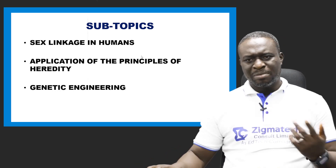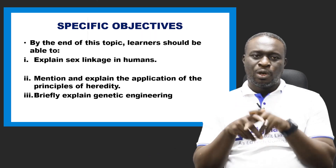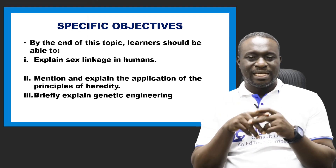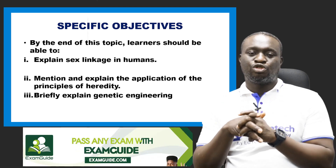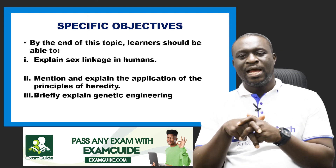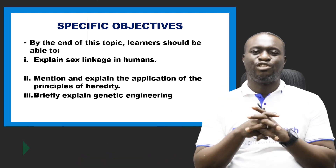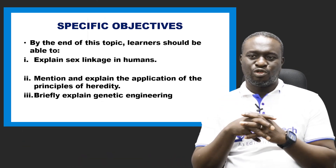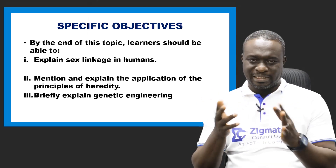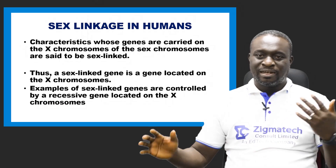Before I continue, I'd like us to look at our specific objectives. By the end of this class, you should be able to briefly explain sex linkage in humans, mention the applications of the principles of heredity, and briefly explain what we mean by genetic engineering. These are the areas you are expected to be able to tell or explain by the end of this class. And if you're set, I'm also ready. Let's begin.